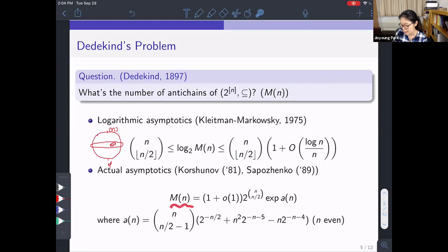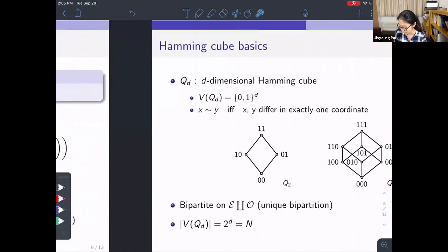Later, Korshinov and Sapozhenko showed and found the actual asymptotics of M(n). They showed that M(n) is asymptotic to this quantity. Here I just put an even case because an odd case is even longer. Anyway, of course, when we compare these actual asymptotics and logarithmic asymptotics, actual asymptotics is much more accurate. For example, when we look at the expression here, this formula gives us the exact main term. On the other hand, when we look at this expression, the right-hand side does not give the precise information about the coefficient of the main term, namely 2^(n choose n/2). And in general, finding the actual asymptotics is much, much harder than finding logarithmic asymptotics.